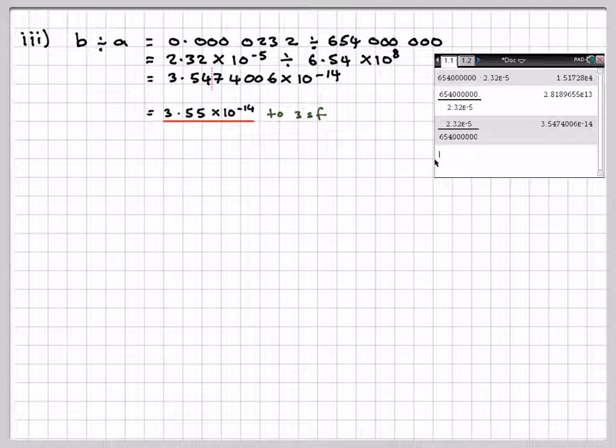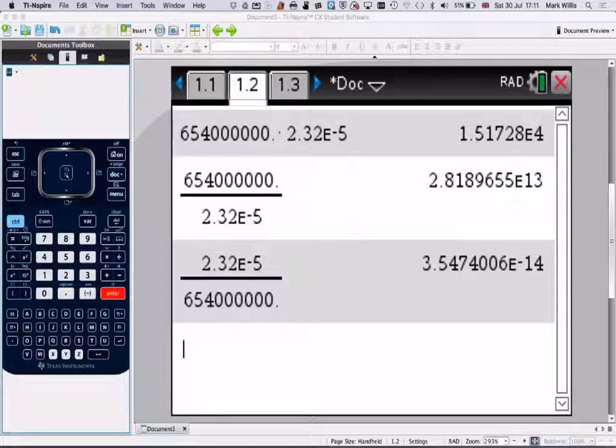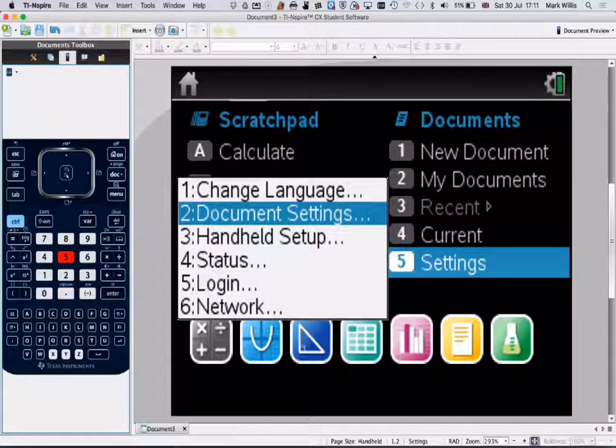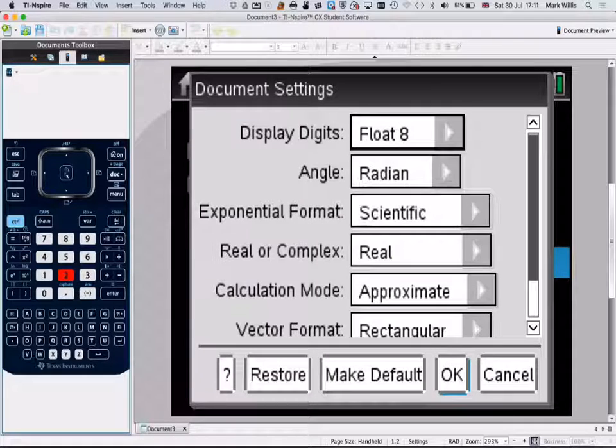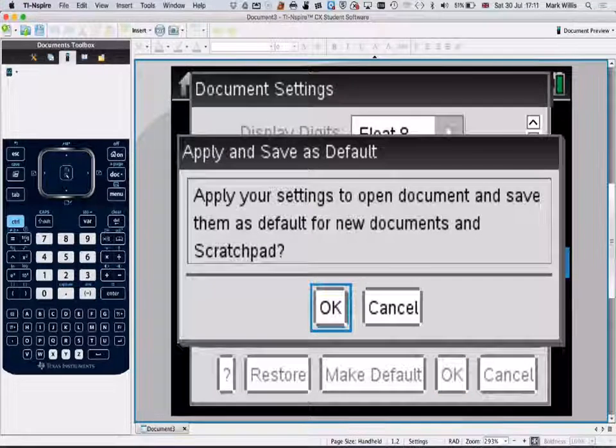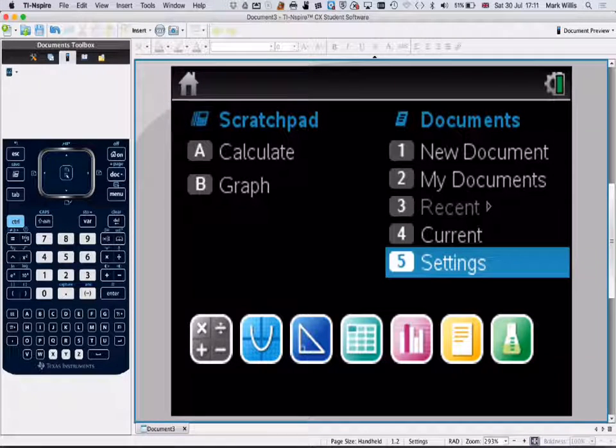And one final thing, maybe what we should do now, is go back to our calculator. Press the Home screen, which is 1. And go to number 5. And go to the document settings, number 2, and then change these back to normal, and then make default, and press OK.